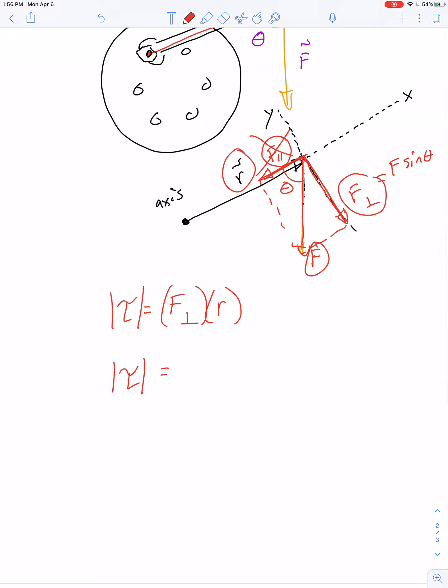So magnitude of torque is F sin(θ) times r, or if you prefer, F r sin(θ). That's just the magnitude.